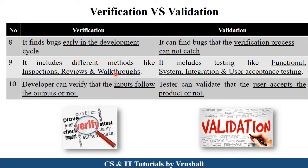In a particular project, there are senior managers or experienced developers and team leads who review the product to check whether it is developed as per the customer requirement or not. But in the validation test process, different types of testing are performed like functional testing, system testing, integration testing, and user acceptance testing.